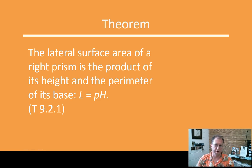So just to put this in a formal theorem, theorem 9.2.1 says that the lateral surface area of a right prism is the height of the prism times the perimeter of its base. So if you have a square prism that's got a square on the bottom and a square on the top, the perimeter of the square base times the height will give you the lateral surface area.